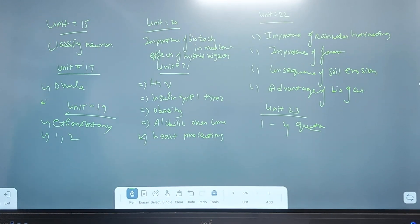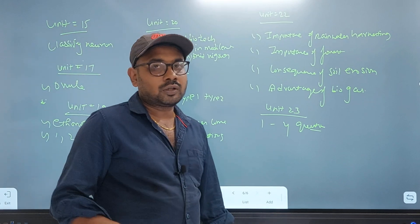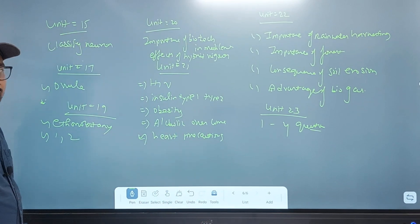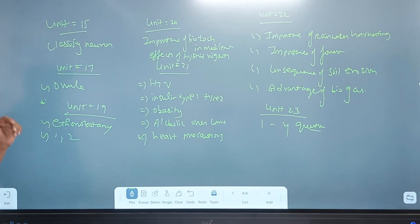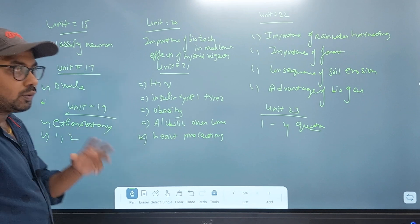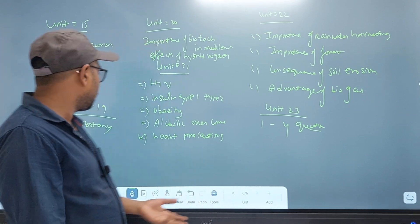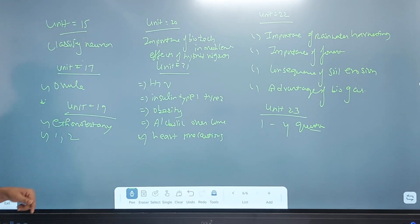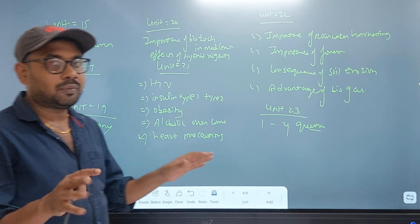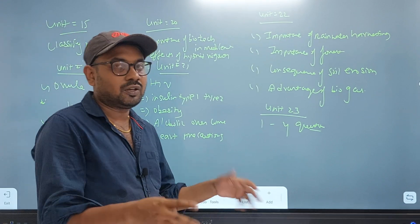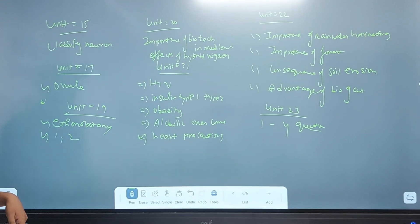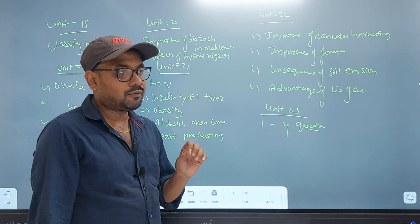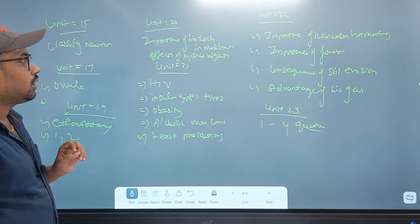Unit 15 is classified neurons. Unit 17 is ovule. Unit 19 is ethnobotany. Acurophetics — link between it. Unit 20 is the importance of biotechnology and medicine; there are two effects of hybrid vigour. You can learn how to do it in every week.